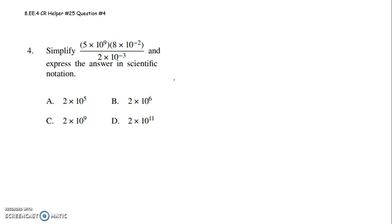Eighth graders, this is to help you with question 4 on CR25. It says to simplify 5 times 10 to the 9th times 8 times 10 to the negative 2nd over 2 times 10 to the negative 3 and express your answer in scientific notation.